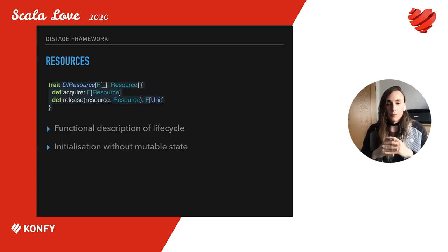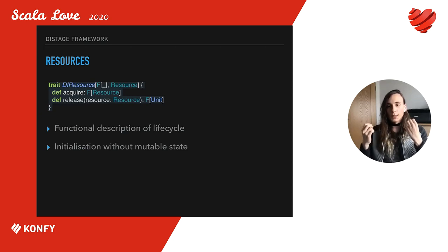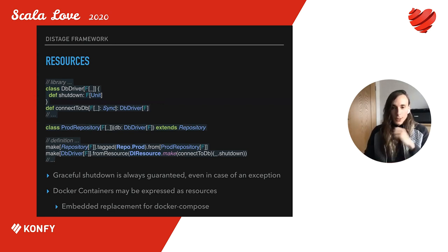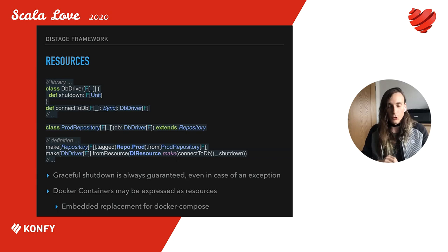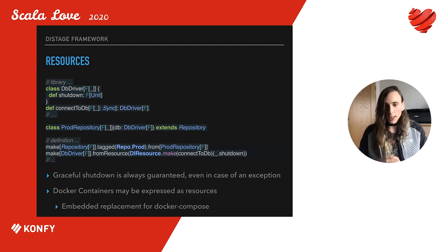Another important concept in D.Stage is Resource. A Resource is a functional description of a component lifecycle which allows you to express startup and shutdown of a component without resorting to mutable state and without allowing objects to have an invalid uninitialized state. Resources can be wired into the object graph; their lifecycles will be performed according to dependency order and they will always shut down gracefully even in case of an exception. We also provide a way to use Docker containers as resources, and a small library of typical Docker containers such as Postgres, Kafka, and Cassandra.